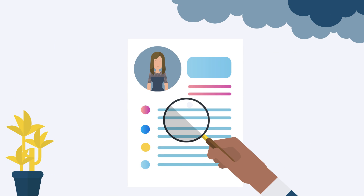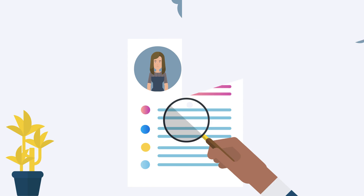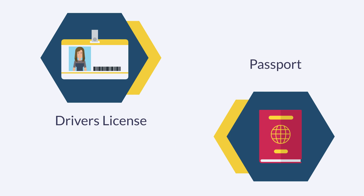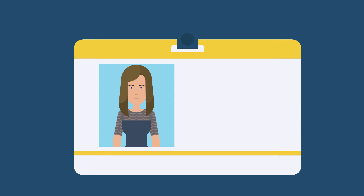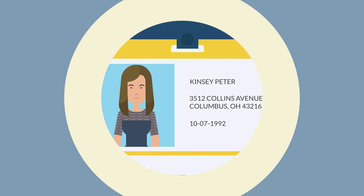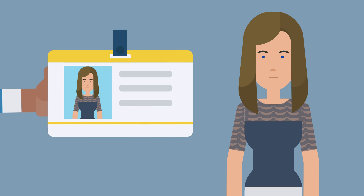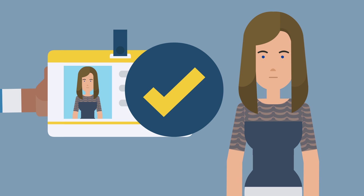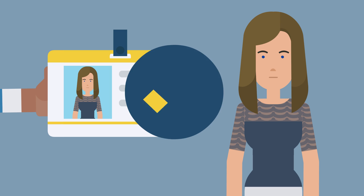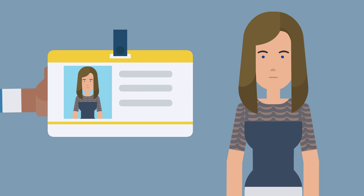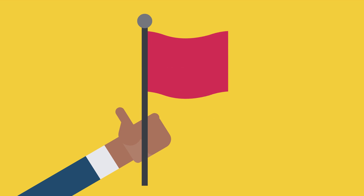The next step is to verify the information provided. A photo ID such as a driver's license or passport will allow you to verify the customer's legal name, street address, and date of birth. You can also take this opportunity to look at the customer's photo. Does the person in front of you look like the photo? Does the physical description match? If the person in the photo is listed as 6'2" with brown hair and blue eyes, and the person in front of you is 5'3", bald, and brown-eyed, it should be a red flag.